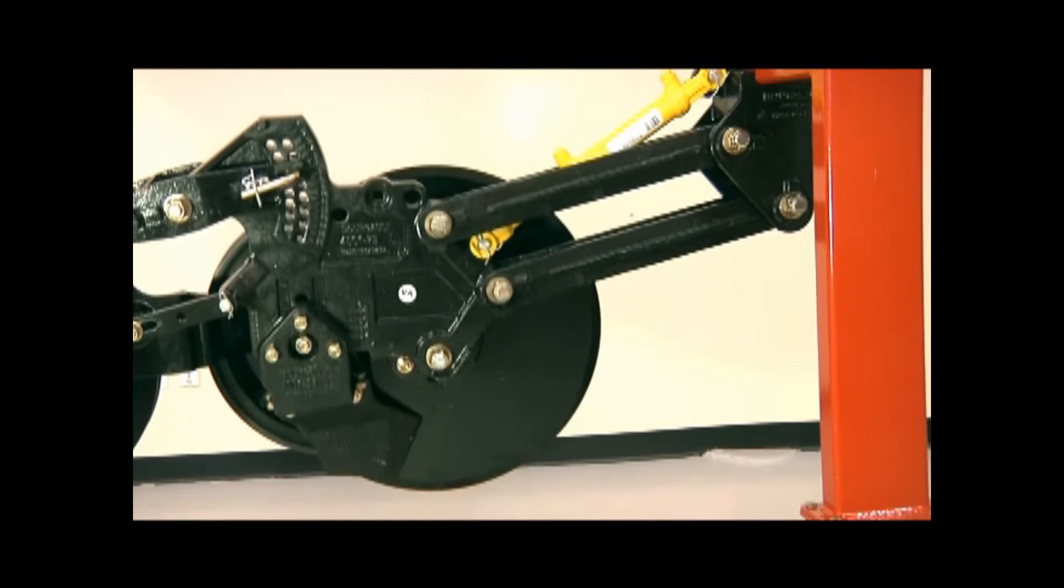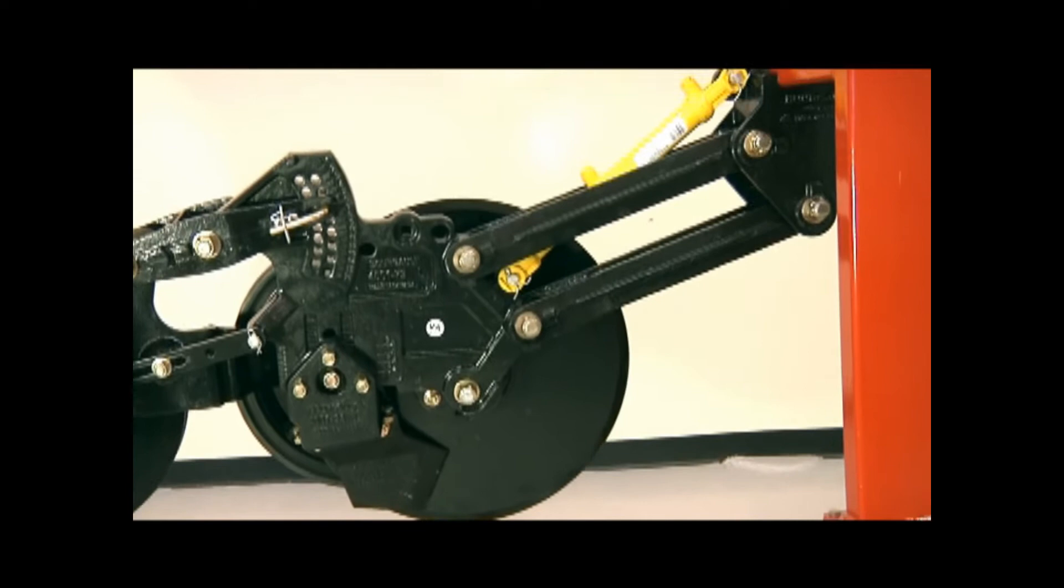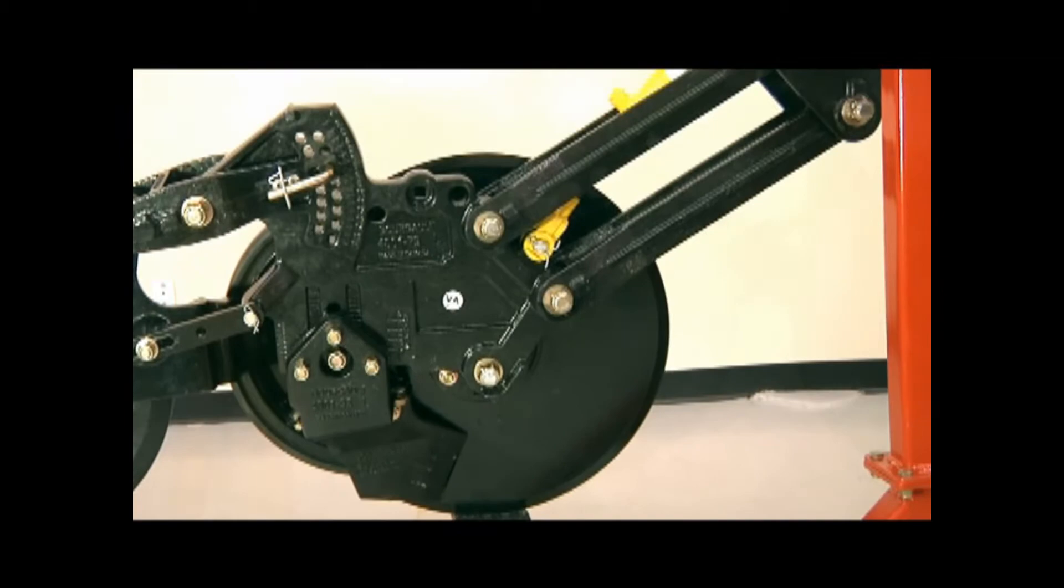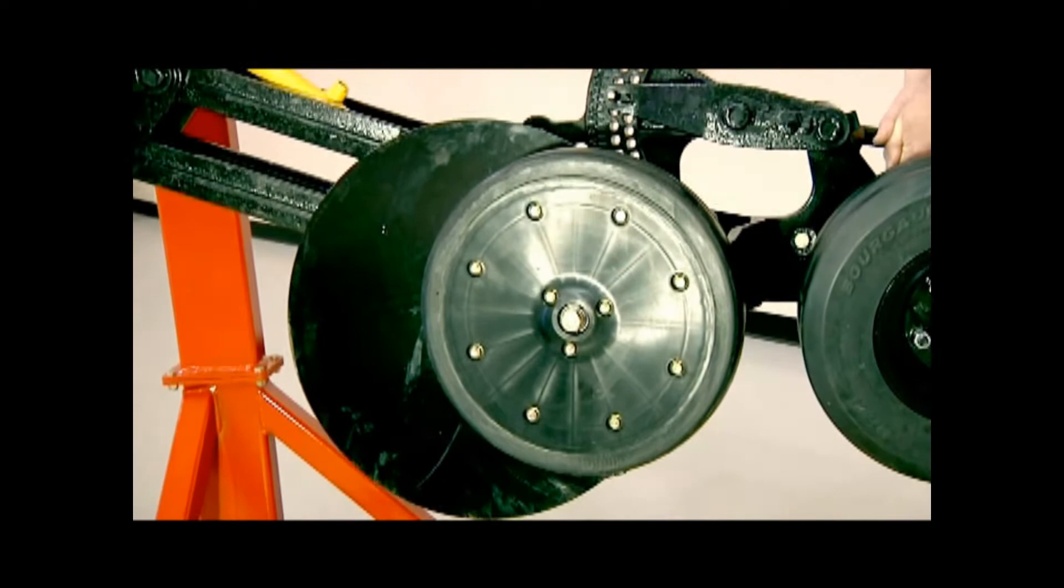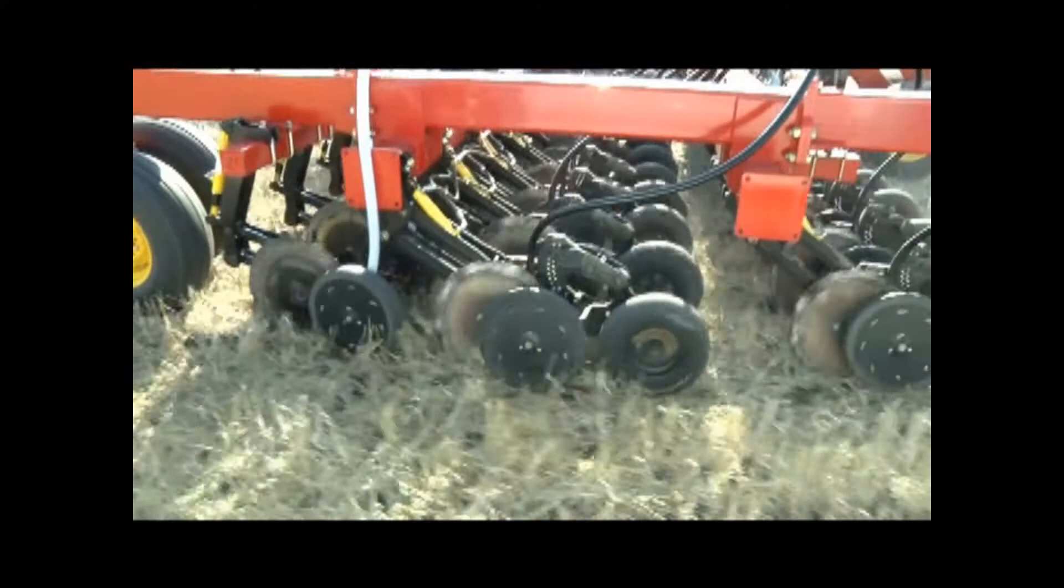The two parallel arms are designed to provide a 1-to-1 contour ratio for the seed opener. This means that for every inch of vertical travel that the packer cleaner wheel assembly makes, the disc opener will also travel one inch. A 1-to-1 contour ratio provides a high degree of contourability but typically will make the opener more sensitive to ground conditions.